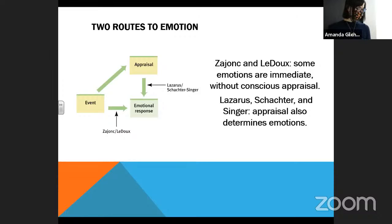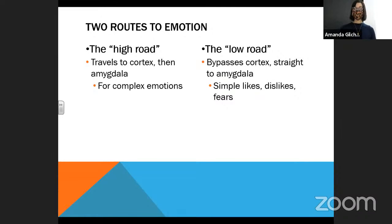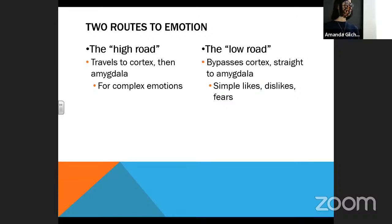The high road first travels to the cortex and then to the amygdala, and we tend to find that this largely exists for complex emotions. For example, last year my grandmother passed away. She had been fighting Alzheimer's disease for about 15 years. That was a very complicated sort of thing because even about 10 years ago, she already didn't remember me — she didn't remember a lot of people in her life. So we had lost the person that she was much sooner than the day that she died.